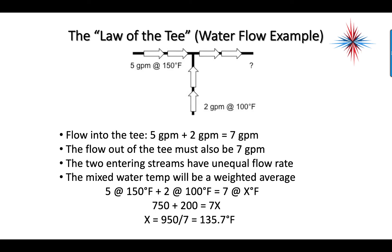Now what happens when we have two different rates? We still have the law of the tee, which means what comes in must go out. So I have five gallons per minute at 150 degrees and two gallons per minute at 100 degrees. We know our inflows are five and two, so our outflow must be seven. Now the two entering streams have an unequal flow rate, so the mixed water temperature will be a weighted average. We have five at 150 plus two at 100 equals seven total at X degrees.